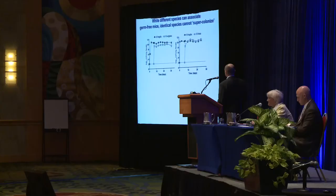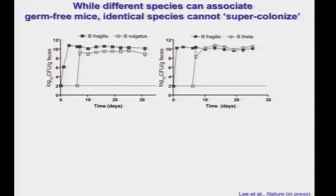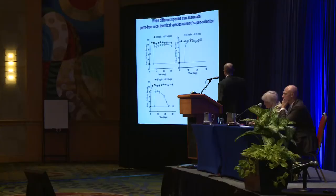A very talented student in the laboratory, Melanie Lee, took on this ambitious project of trying to assemble a microbiome from scratch, working with organisms we can culture and genetically manipulate and adding them sequentially to mice. If we take a germ-free animal and give an inoculum of Bacteroides fragilis, we see nice colonization. If we then come back with Bacteroides vulgatus, a highly related species, there's really no competition between these two organisms. We can reverse the orders of colonization and see no effects.